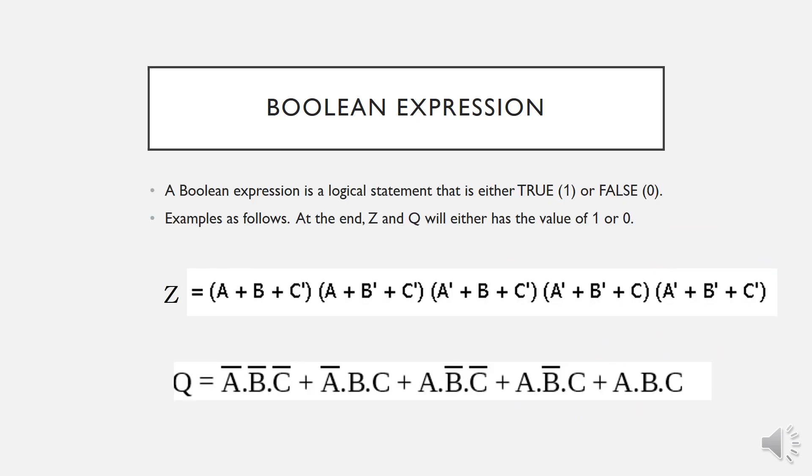In any digital system or digital circuits, the mathematical equations that represent the digital circuits is called Boolean expression. The Boolean expression will only have a value of either zero or one. In this following example, there are two Boolean expressions, one is Z and the other one is Q.